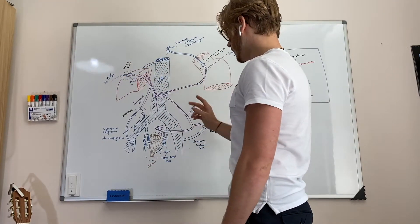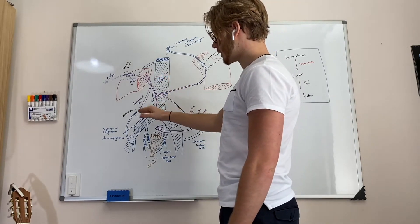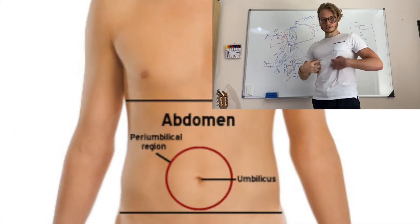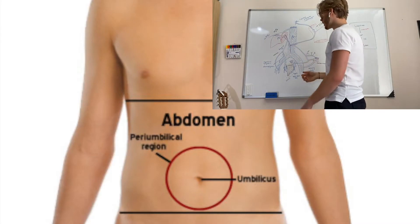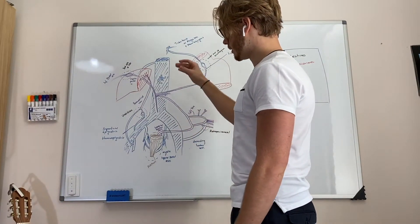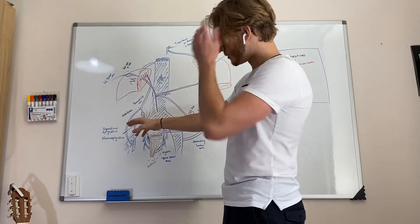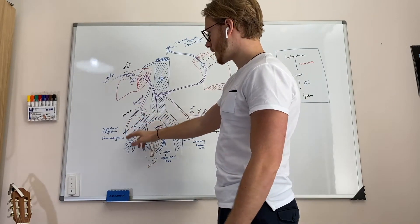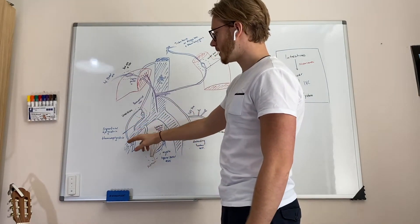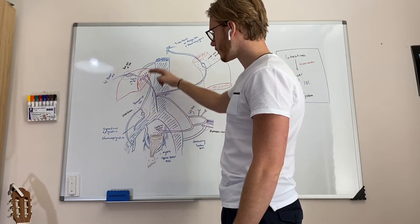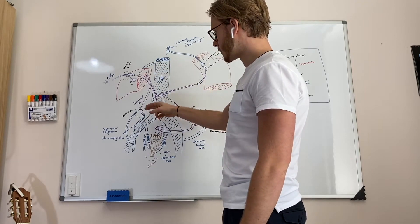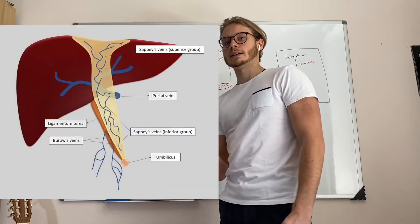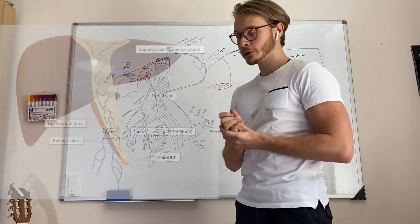Number three: the location is around the umbilicus. The caval veins are the superficial epigastric and the thoracoepigastric veins coming up from below and from above. The portal connection comes from the paraumbilical veins, which you can find in the round ligament of the liver.